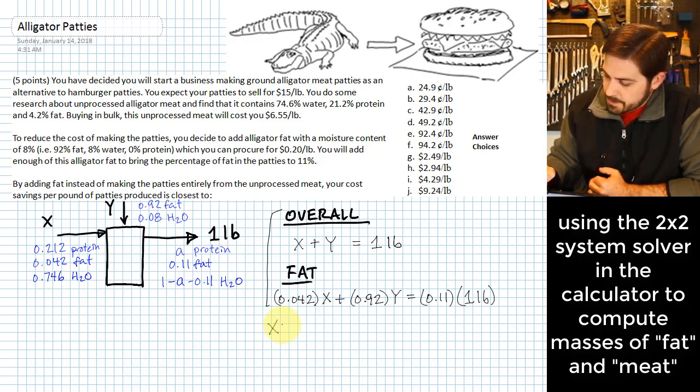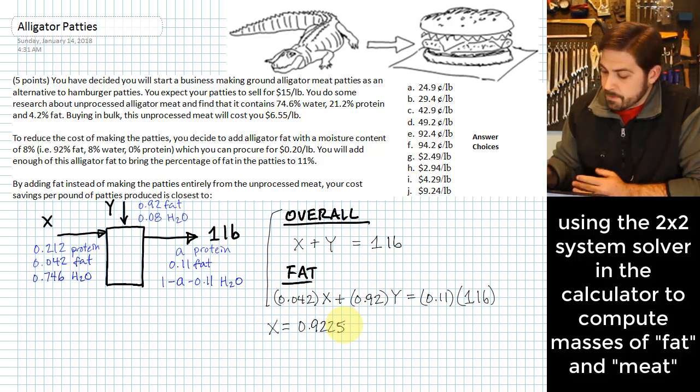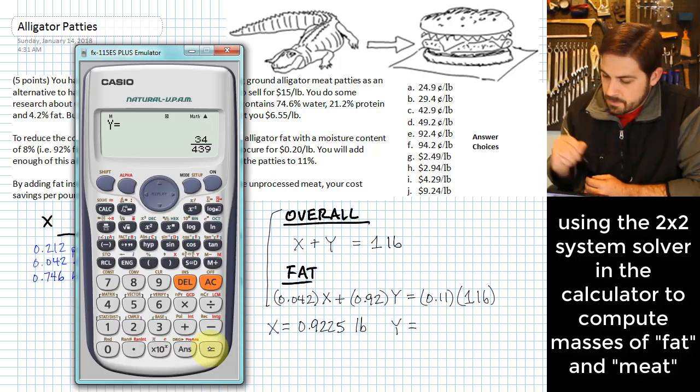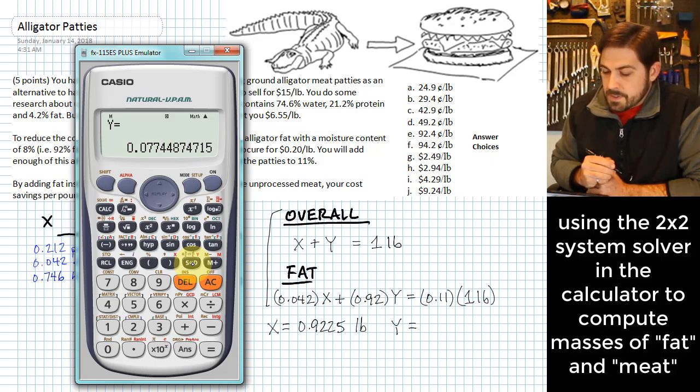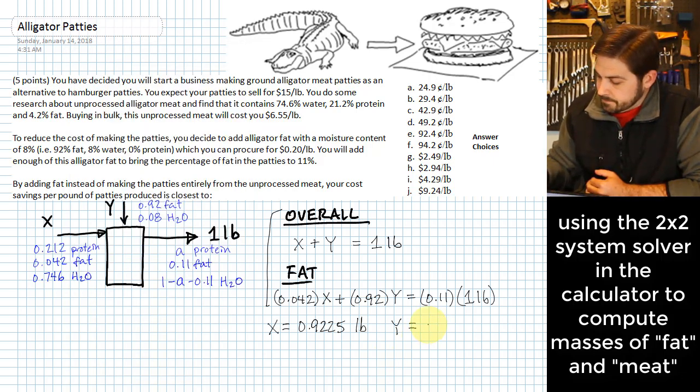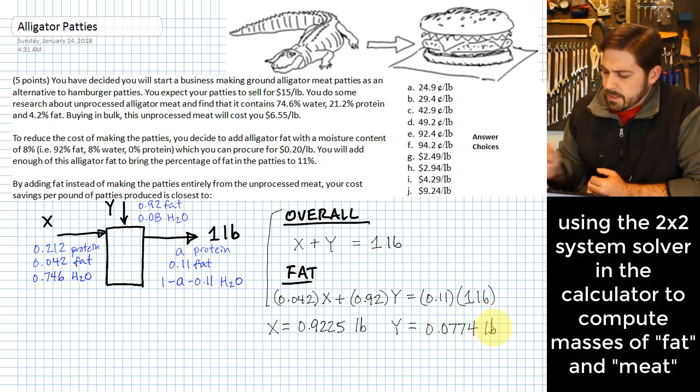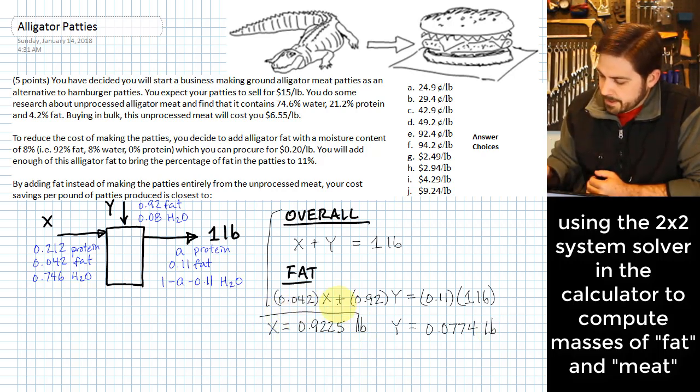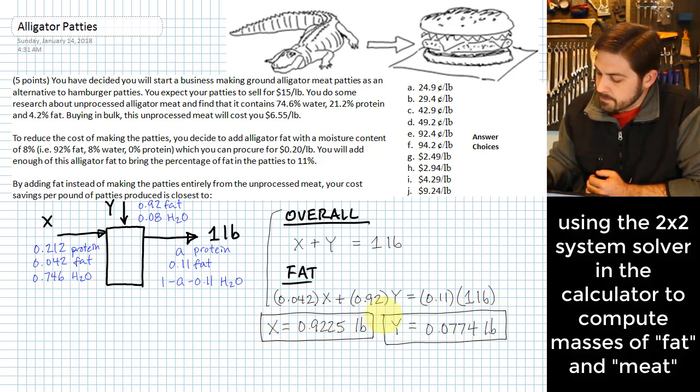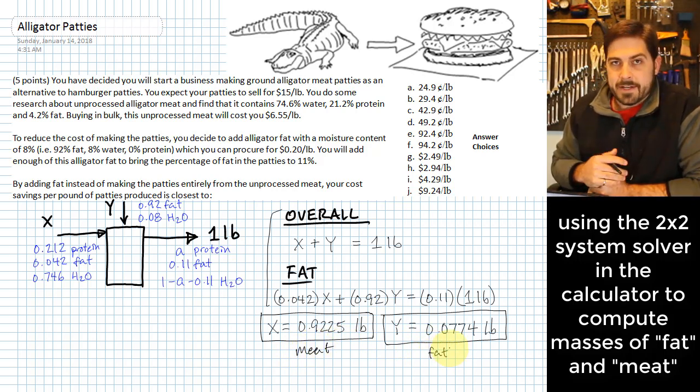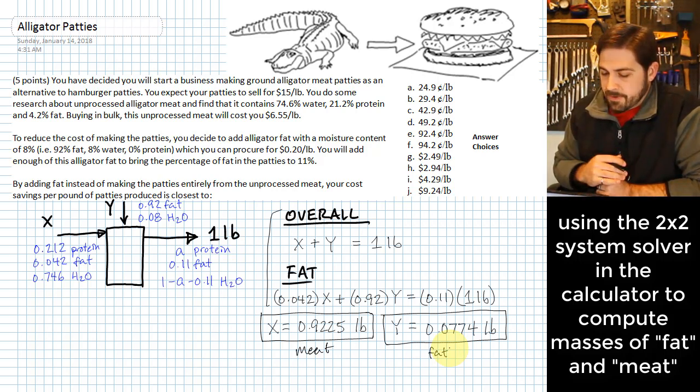Okay, X is equal to 0.9225 units. Well, this is going to be in pounds. Y is going to be equal to 0.0774. Okay, now this gives us how much weight we have for the original meat and then for the added fat stream that we were going to have that isn't all fat, but that's how much we need of that fat water mixture.